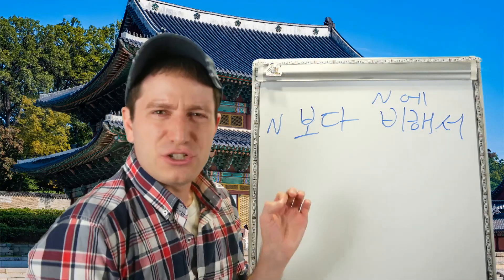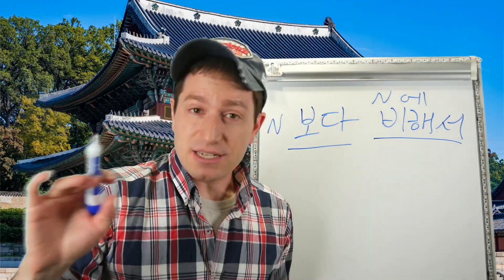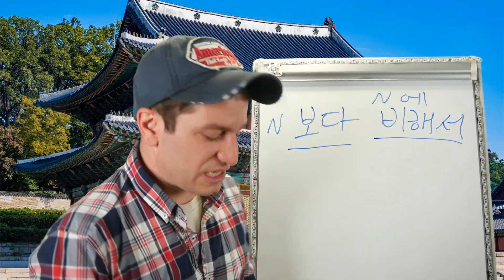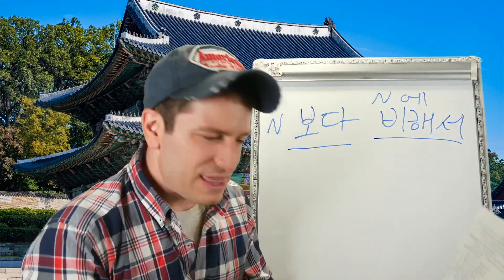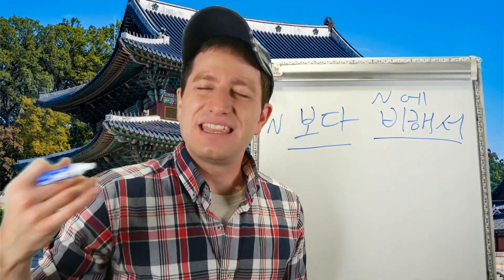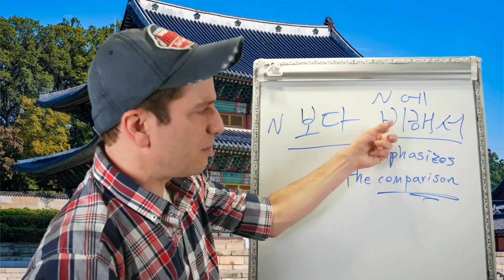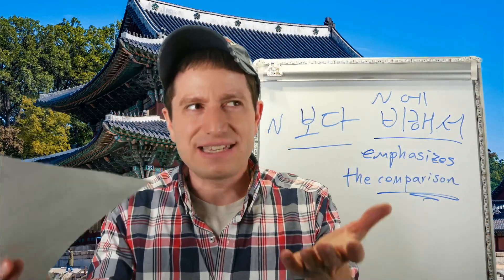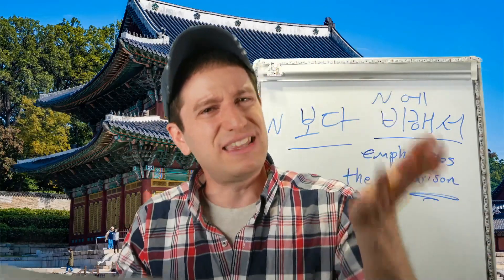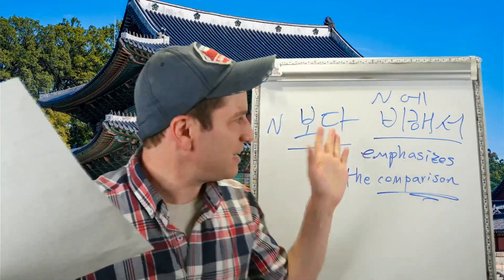Both 보다 and 에 비해서 can be swapped out in a sentence since they have the same meaning and usage. But the nuance is a bit different — 에 비해서 sounds a little fancier, though it's still commonly used in speech. What it does that 보다 doesn't quite do is emphasize the difference, because it literally means 'comparing to something,' which adds emphasis to the comparison being made.